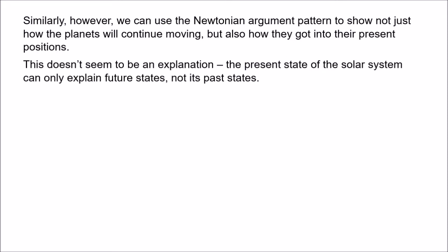So although the unification model accommodates some of the explanatory asymmetries that pose difficulties for the deductive nomological model, it doesn't completely solve the problem. It is perhaps a bit more plausible in this case to bite the bullet and say maybe the present state of the solar system does explain its past states — that would be an extremely counterintuitive position, but I'm not sure it's quite bad enough to sink the unificationist model entirely.